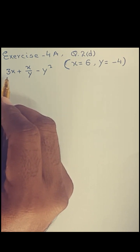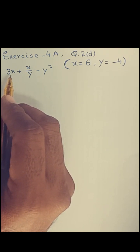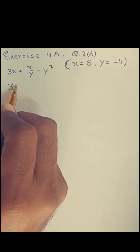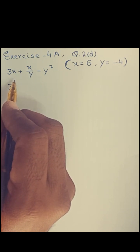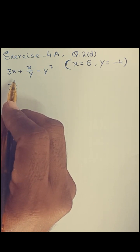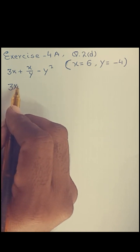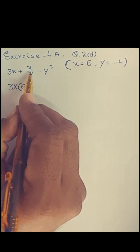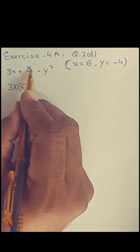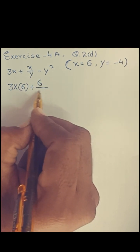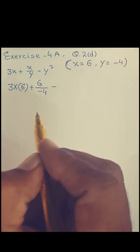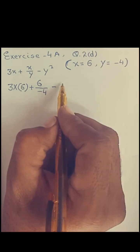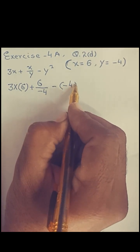At the first step we have to put the values of the variables into the expression. You know that 3 times x means x is in multiplication with 3. It is better practice that whenever we put values of variables, we put those values inside brackets. So this is 3 multiplied by 6. Then this is plus sign, x over y — we put value of x as 6 and value of y as minus 4.